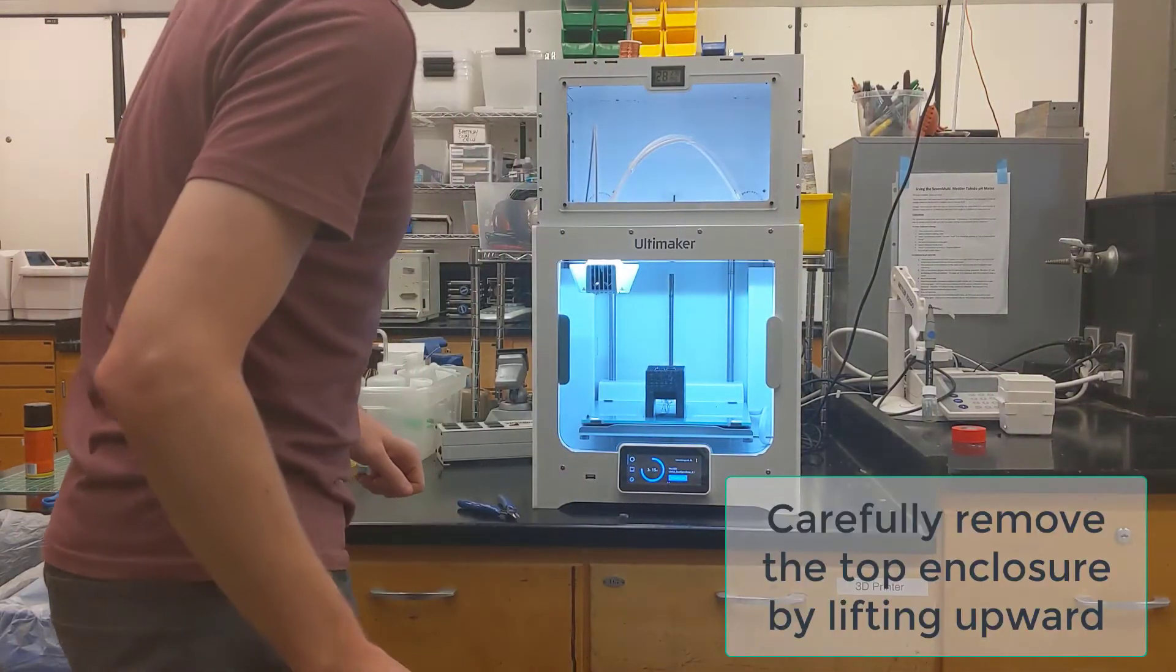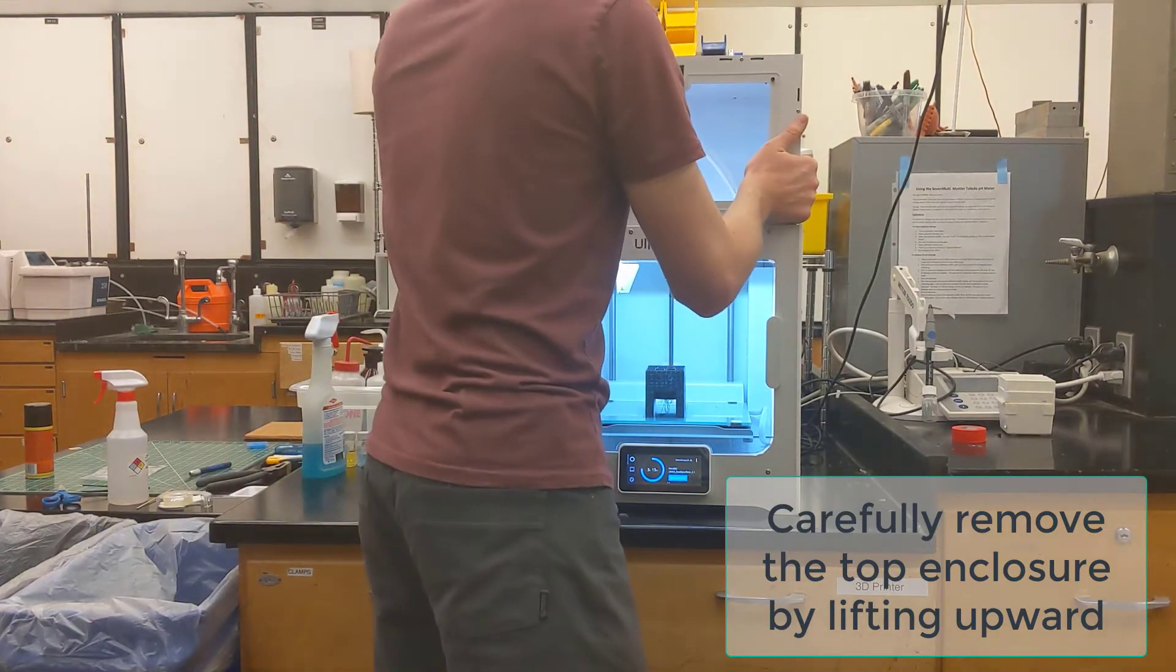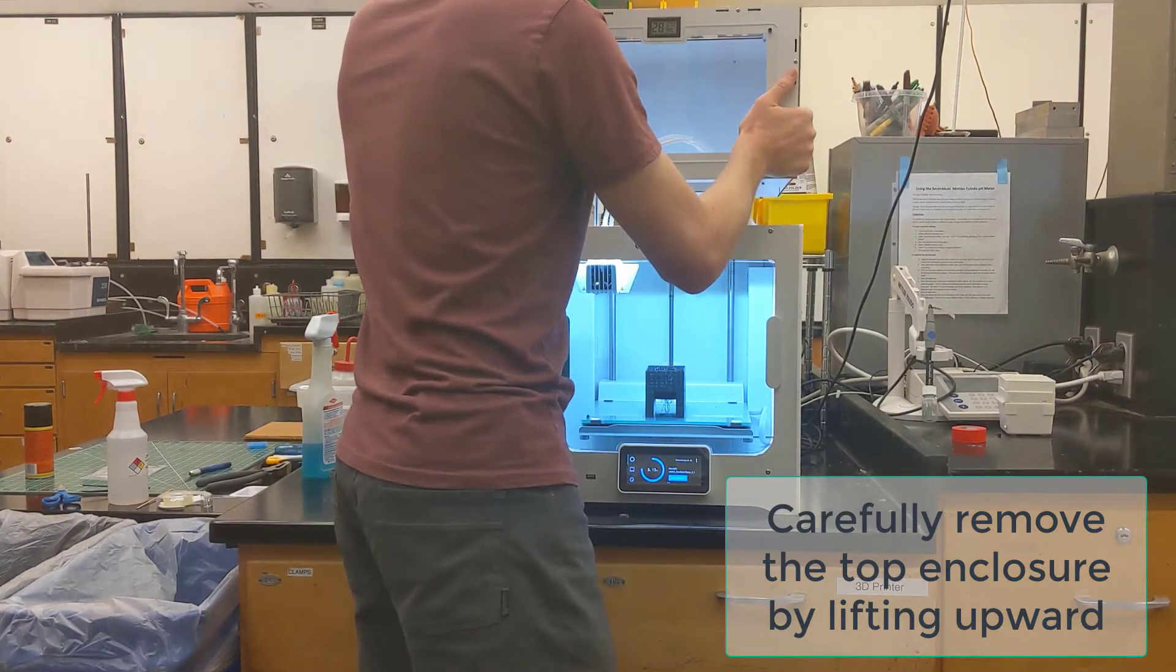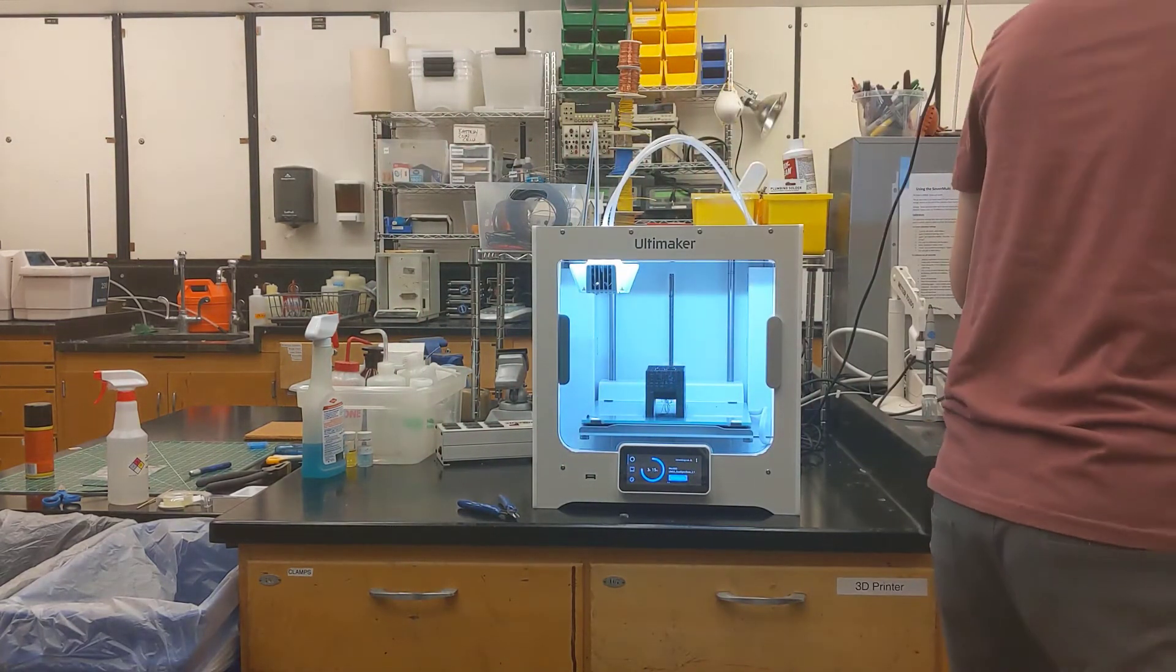Alright, the first thing you're going to want to do here is just remove the entire top enclosure. This thing just lifts right off. So you can just take it and then set it off to the side.